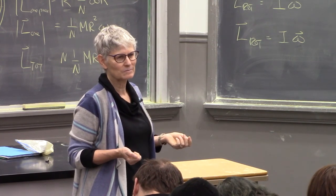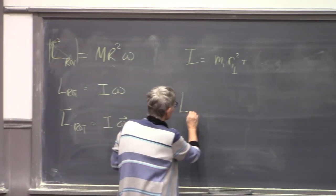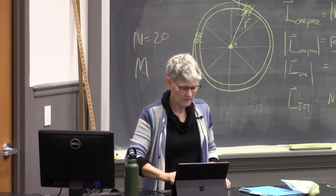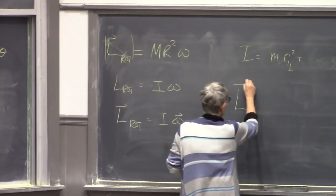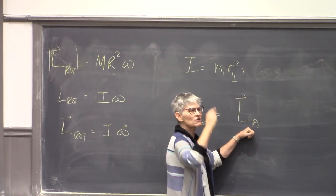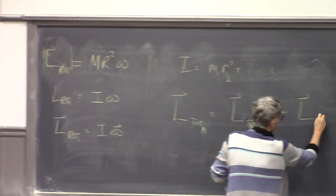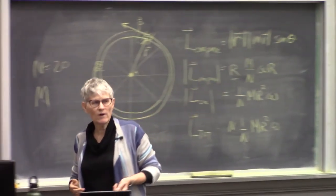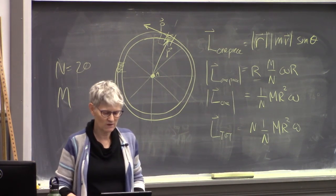So in general, the total angular momentum of a system about location A equals the translational angular momentum plus the rotational angular momentum around the center of mass. One of the things we'll do this afternoon is calculate both pieces of the Earth's angular momentum with respect to the Sun — a beautiful application of these ideas.